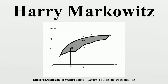He published the critical line algorithm in a 1956 paper and used this time at the foundation to write a book on portfolio allocation, which was published in 1959. Markowitz won the Nobel Memorial Prize in Economic Sciences in 1990 while a professor of finance at Baruch College of the City University of New York.